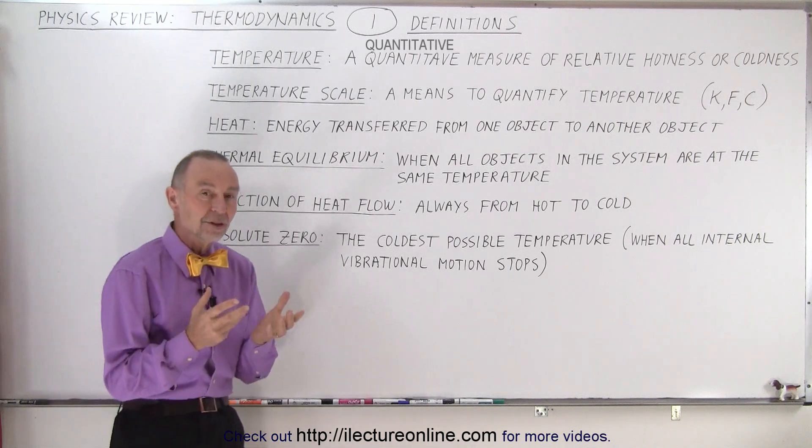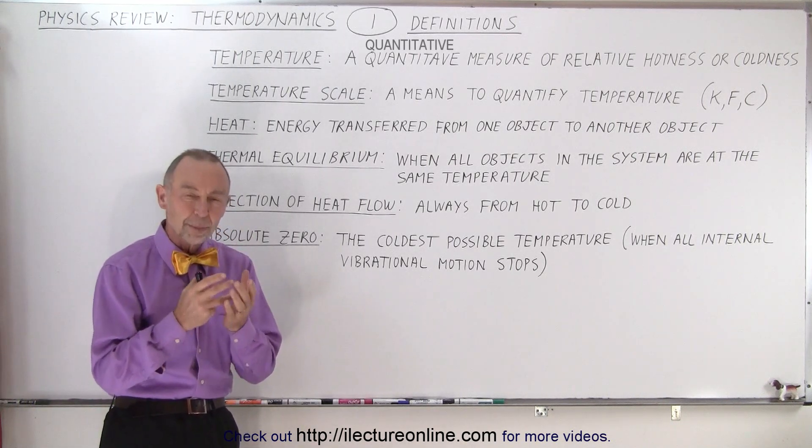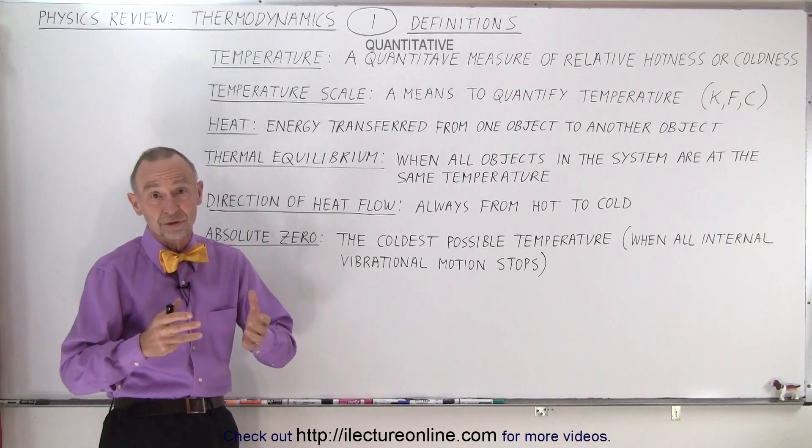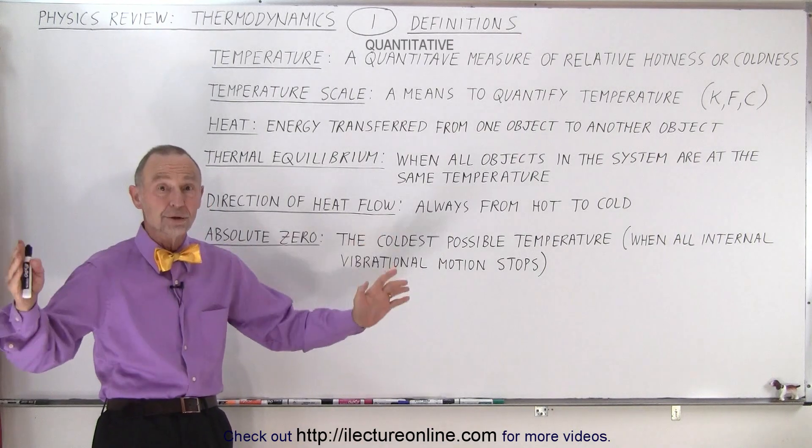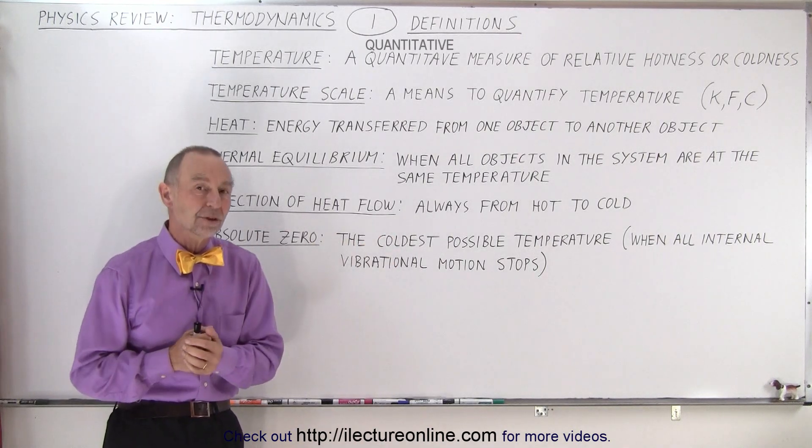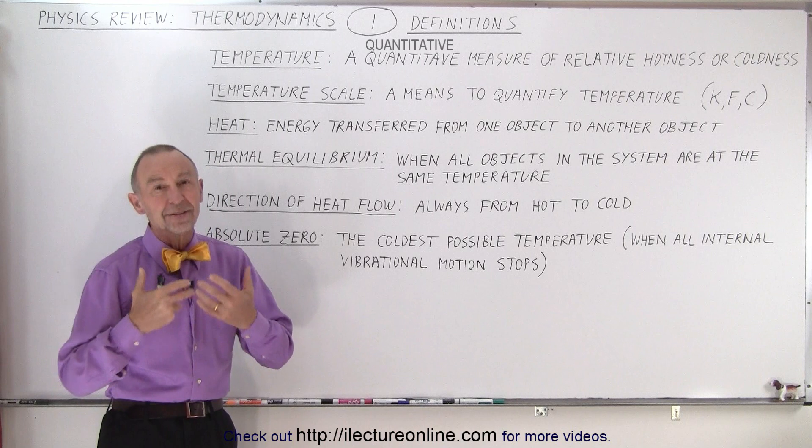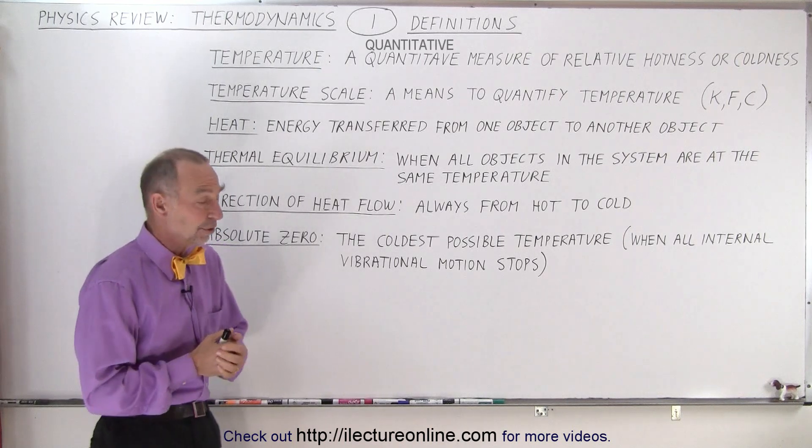And finally, the concept of absolute zero, which is the coldest possible temperature that can exist. It turns out there's nowhere anywhere in the universe where you will find absolute zero. We'll find out that it's not possible to obtain absolute zero.